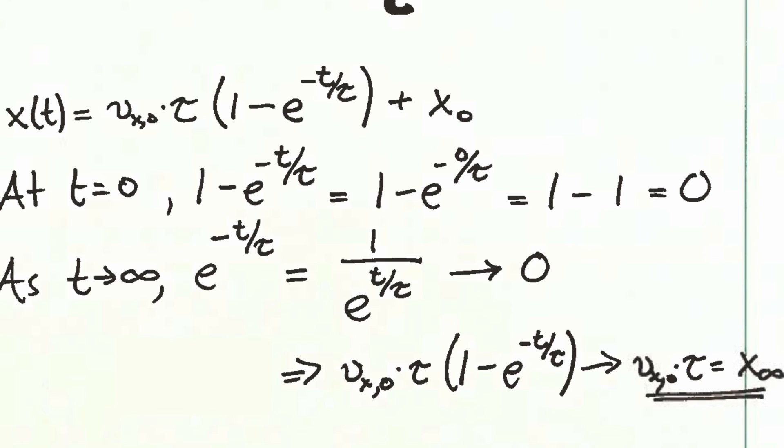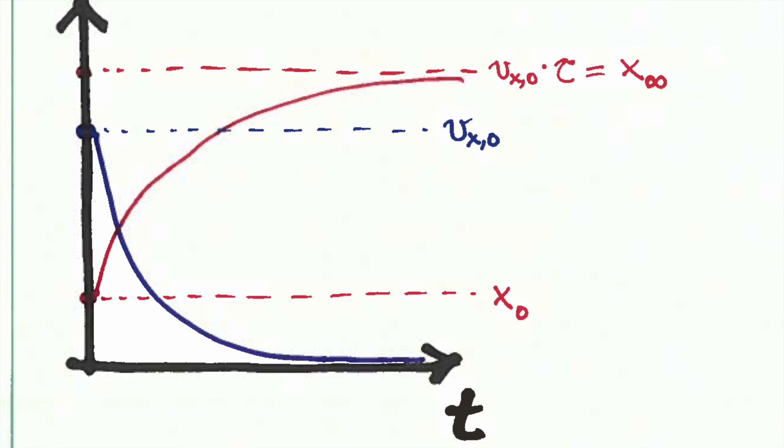If we consider the case that t is going to infinity, so t getting bigger and bigger and bigger, the exponential e to the minus t over tau, remember that's the same as 1 over e to the t over tau. And so as t gets bigger and bigger and bigger, e to the minus t over tau is going to get smaller and smaller. It's going to approach zero. And so we see at the bottom of these equations, vx0 times tau times that term in the parentheses. The second term in the parentheses is going to go to zero. The first term, of course, is 1. And so as t goes to infinity, we can see that x will approach this finite value, vx0 times tau. This behavior is completely consistent with our expectations based on the plot.